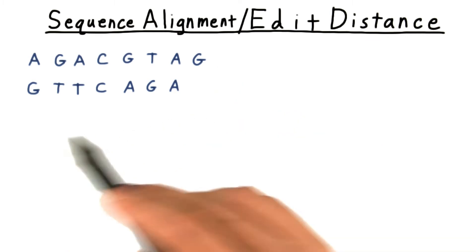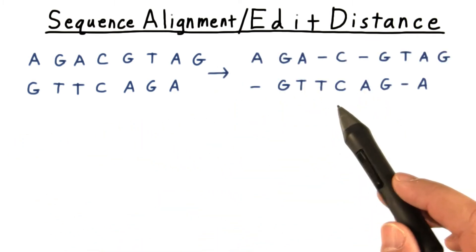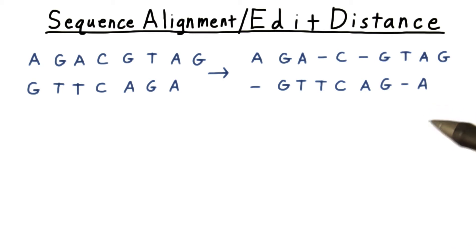For example, suppose that we're given two genetic sequences, and we want to line them up as best as possible, minimizing the needed insertions, deletions, and changes to the characters that would be needed to convert one to the other.